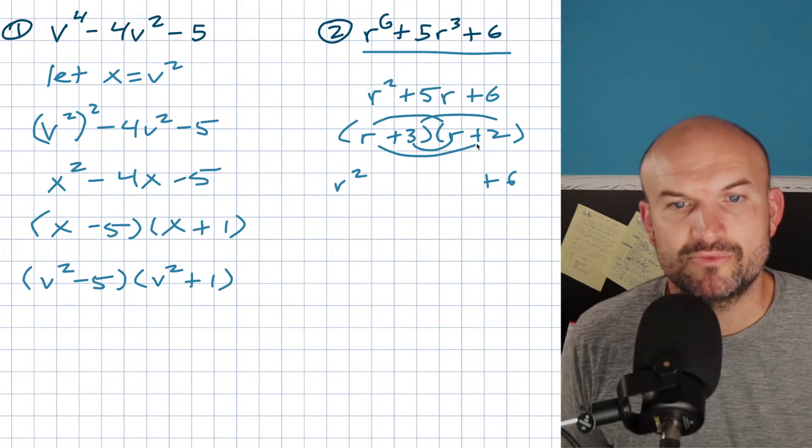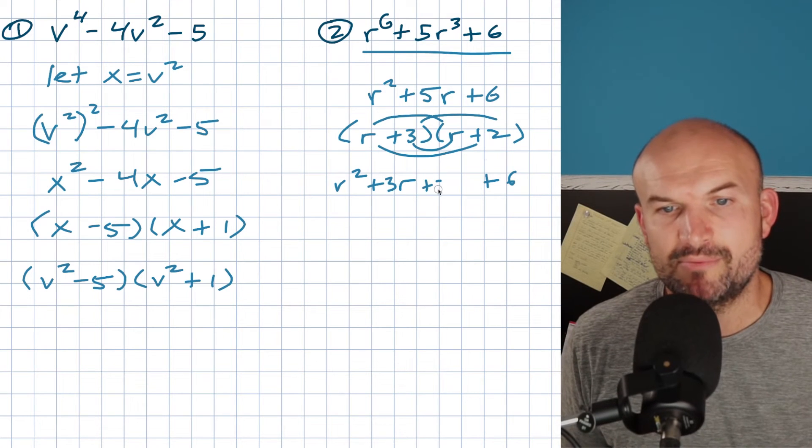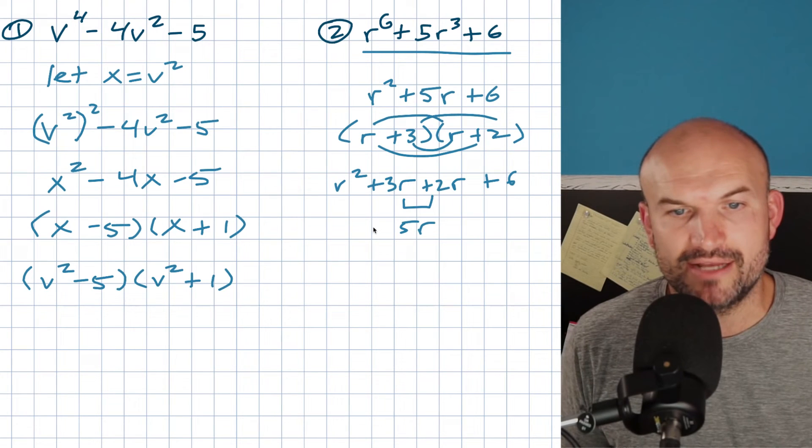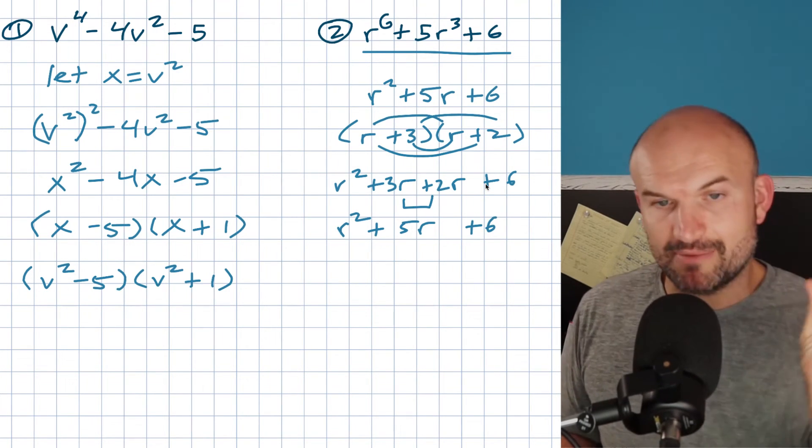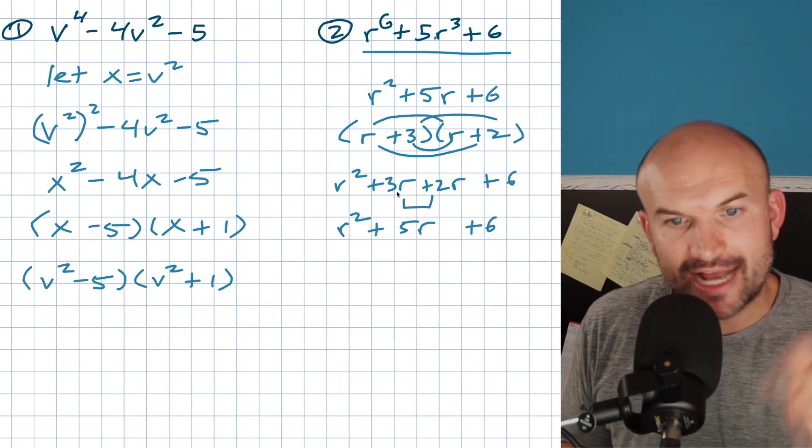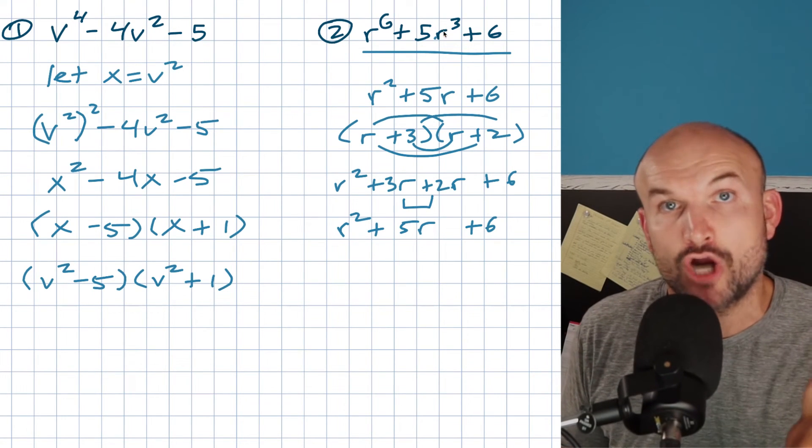Now, my middle terms, this is something really important. 3 times r is going to give you 3r, and r times 2 is going to give you positive 2r. What is the middle term? That's going to give me 5r. So that's r squared plus 5r plus 6. Now, what I want you to think about: my middle terms, what am I actually trying to get my middle term to be? An r cubed. I don't want them to add to give me 5r, I want 5r cubed.